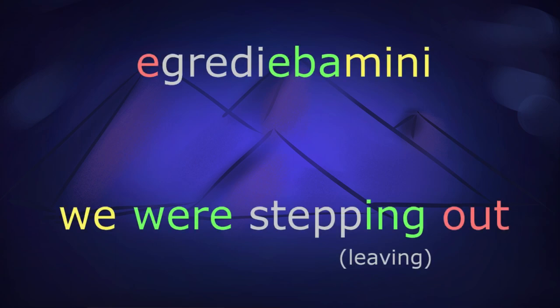In English we would say, 'we were leaving'. In Latin, 'egregie bamini'. A single word constructed from the root gredi, the verb to step, with these elements fixed onto it to do the same job that 'we' and 'were' are doing in English, which is considered a largely analytic language.